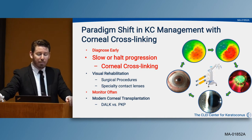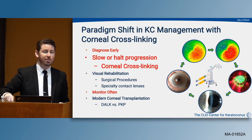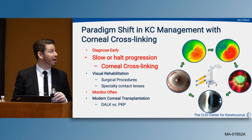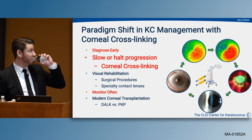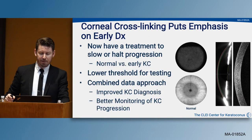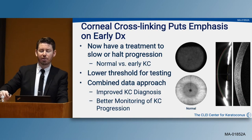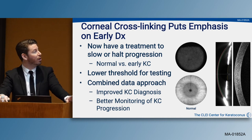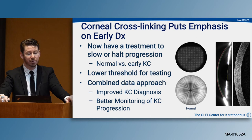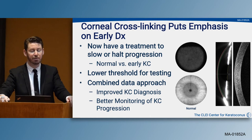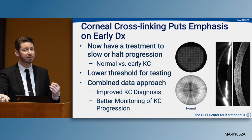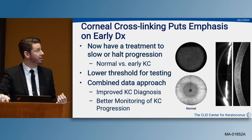We want to keep modern forms of corneal transplants such as DALK and PK as our treatment of last resort. Corneal collagen cross-linking really puts the emphasis on early diagnosis. We need to lower our threshold for working up patients and use a combined data approach to diagnose keratoconus earlier and monitor individuals for progression.